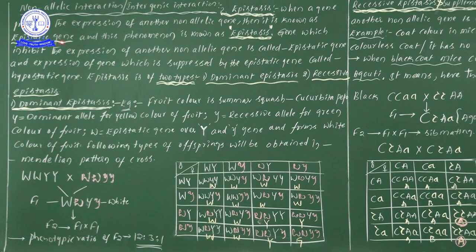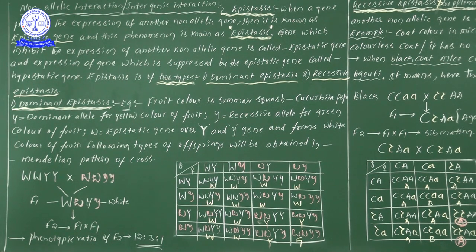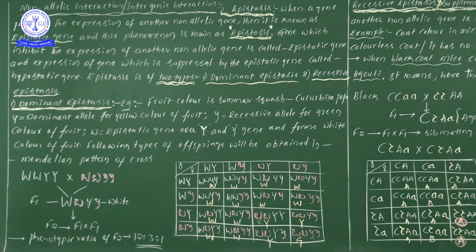The epistatic gene — this phenomenon is known as epistasis. The gene that inhibits the expression of another allelic gene is known as the epistatic gene. And the gene whose expression is suppressed by the epistatic gene is known as the hypostatic gene.